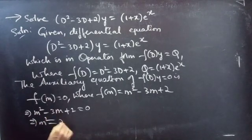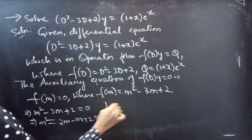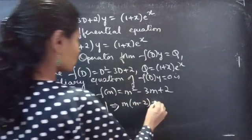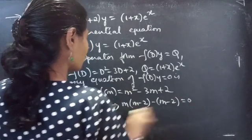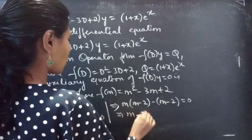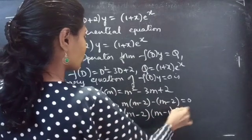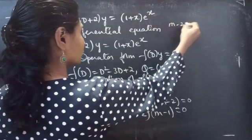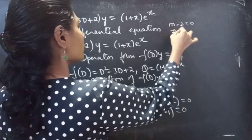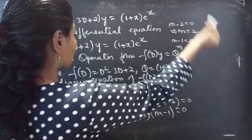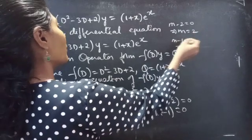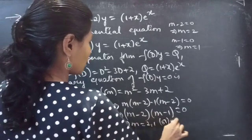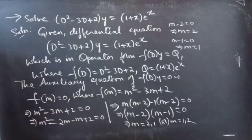Split -3m as -2m - m: m² - 2m - m + 2 = 0. Taking m common from the first two terms gives m(m - 2), and taking minus common from the next two terms gives -(m - 2) = 0. Factoring out (m - 2): (m - 2)(m - 1) = 0. Equating each factor to zero, from m - 2 = 0 we get m = 2, and from m - 1 = 0 we get m = 1.